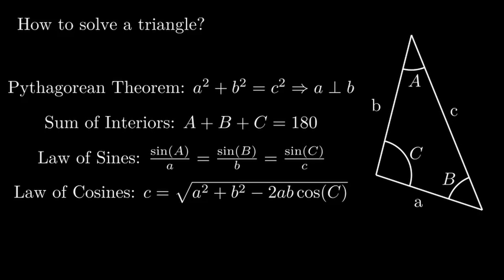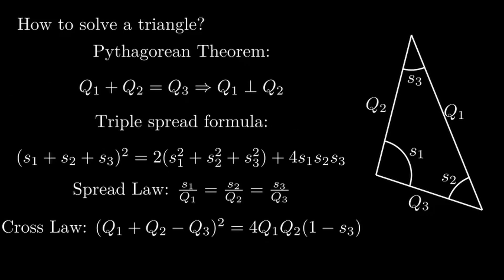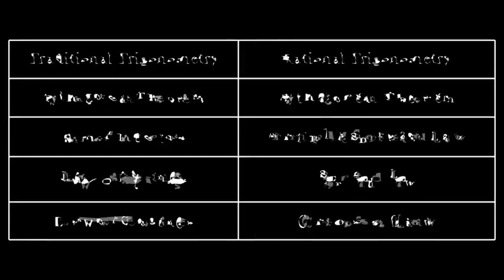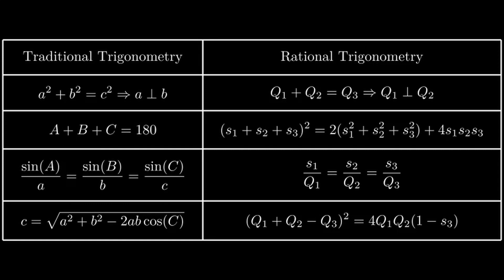Rational trigonometry does not need to appeal to trigonometric functions, as variations of these four identities can be proven with just coordinate geometry. They are called Pythagorean's theorem, the triple spread formula, spread law, and the cross law. Each of these identities directly replaces an identity in traditional trigonometry. Anytime you would need to use the sum of interiors, you can instead use the triple spread formula. The same is true with the law of sines and the spread law, or the law of cosines and the cross law.